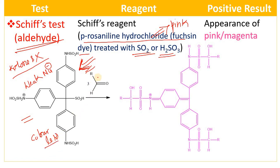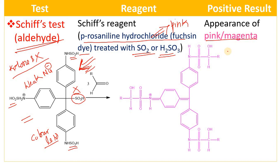When you treat the Schiff's reagent with aldehyde, there is participation of three moles of aldehyde. In this molecule you can find three nucleophilic sites. These three nucleophilic sites will attack on three aldehydes, and there is formation of a nucleophilic addition product resulting in a pink or magenta colored compound. By using Schiff's test you can easily distinguish which one is aldehyde and which one is ketone.